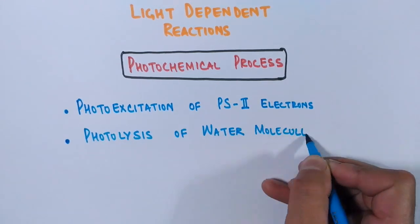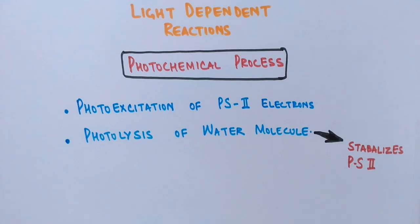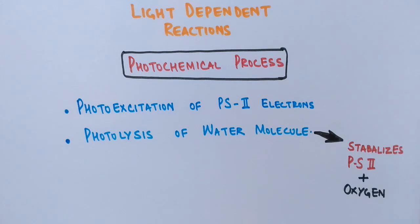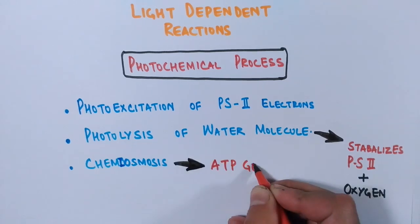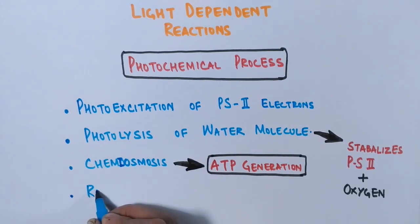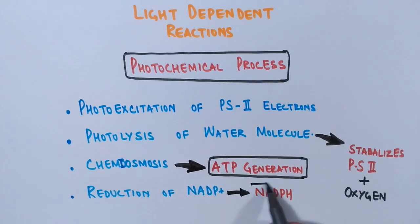Following this, there is photolysis of the water molecule. The first function of water photolysis is to stabilize Photosystem II, which is deficient in an electron that was ejected during photoexcitation. The photolysis of water also releases oxygen. The photoexcited electron then enters a journey through the electron transport chain, which creates a proton gradient. Chemiosmosis then occurs, involving ATP generation. Finally, NADP+ is reduced to NADPH.